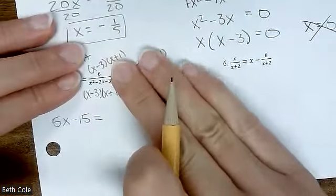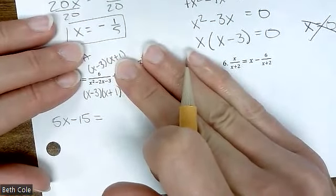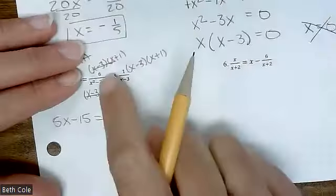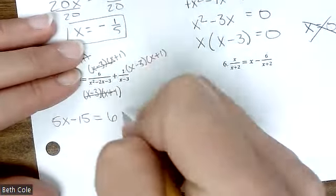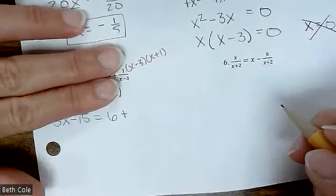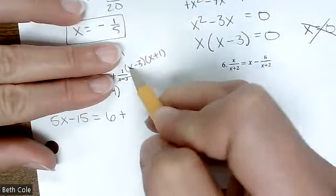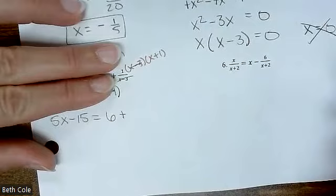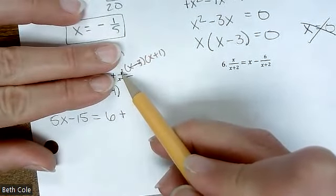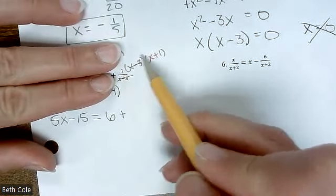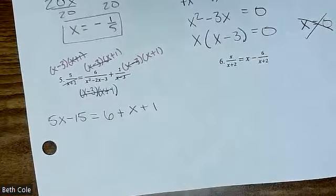Now look at the one in the middle — what cancels? The whole thing. So you're left with six. Plus sign. Look at the last one — what cancels? X minus three. So what are you left with? Times one, which isn't going to change anything — it's just going to be X plus one.